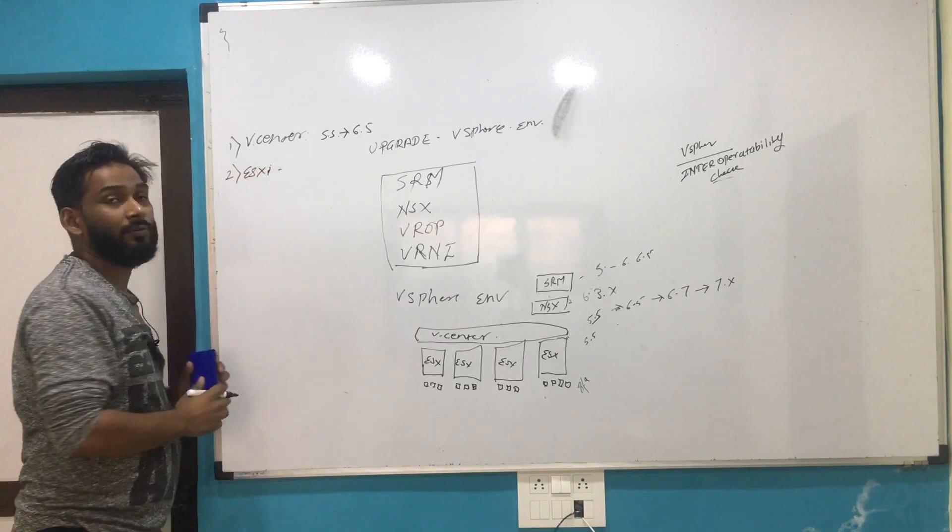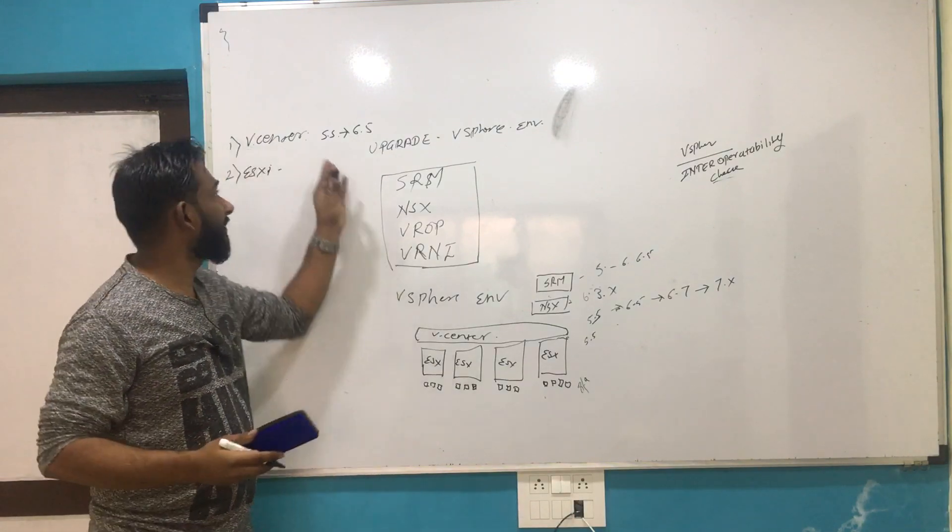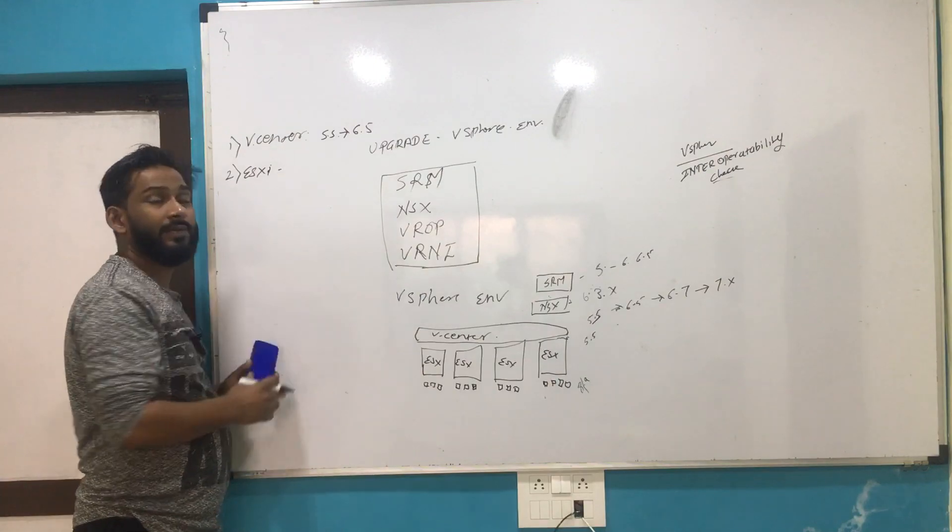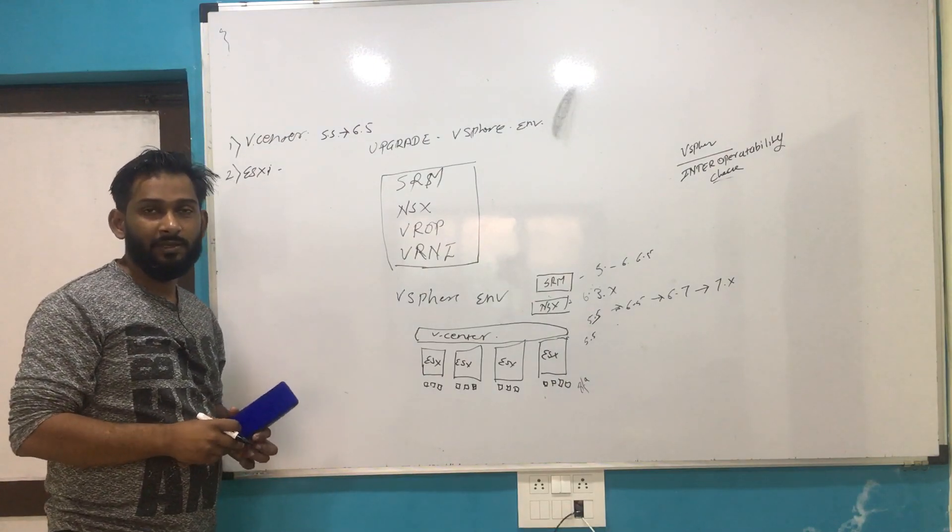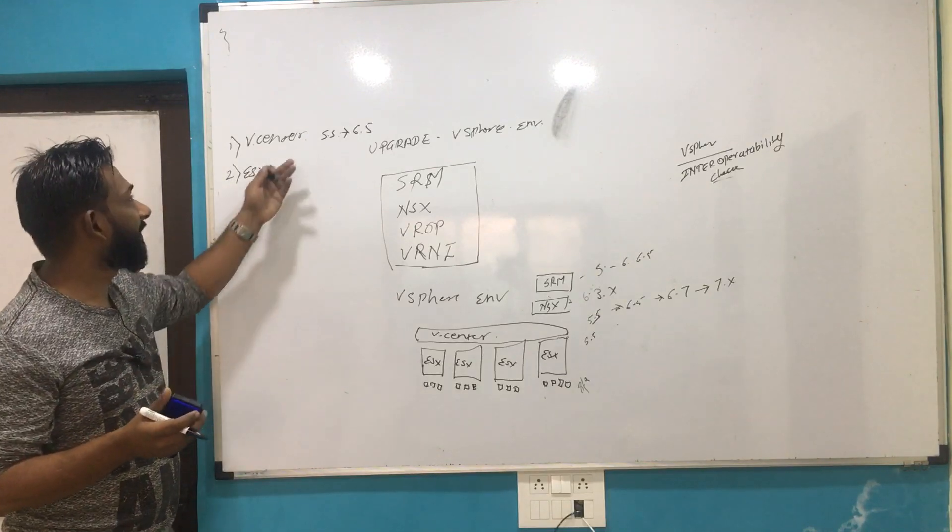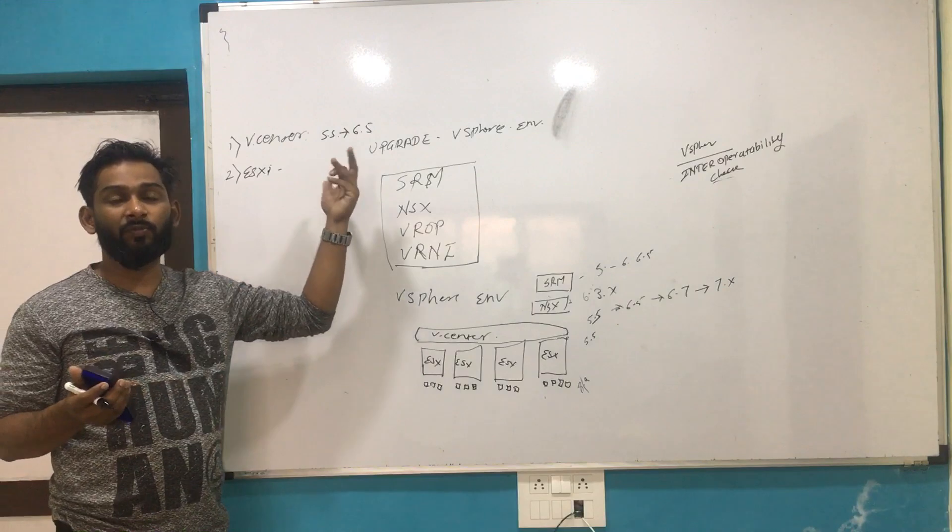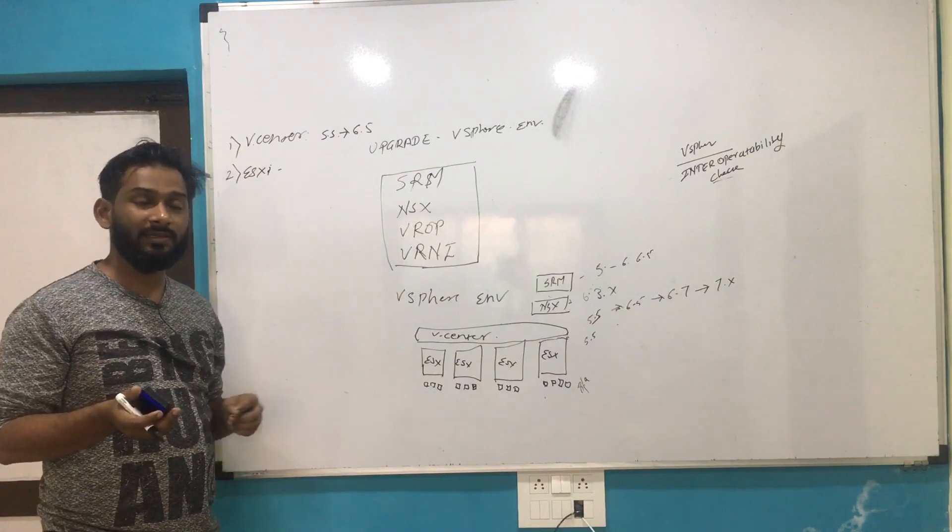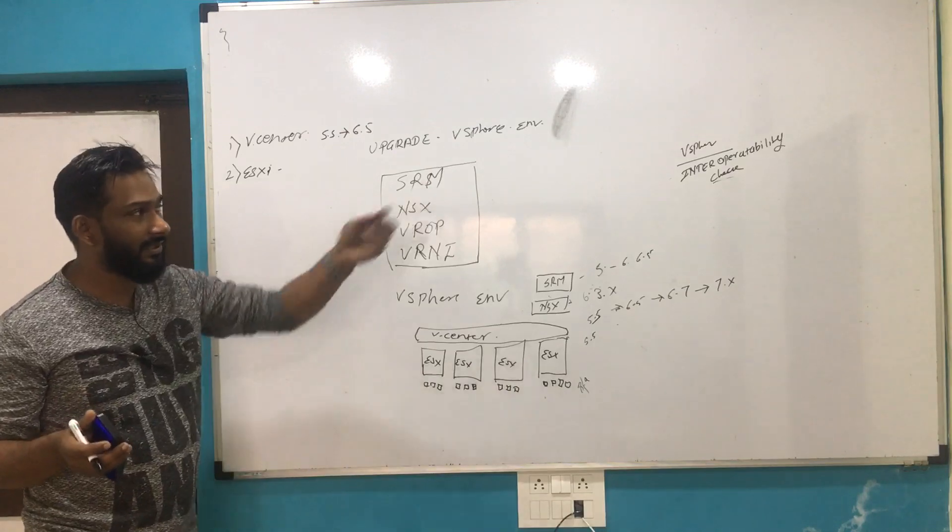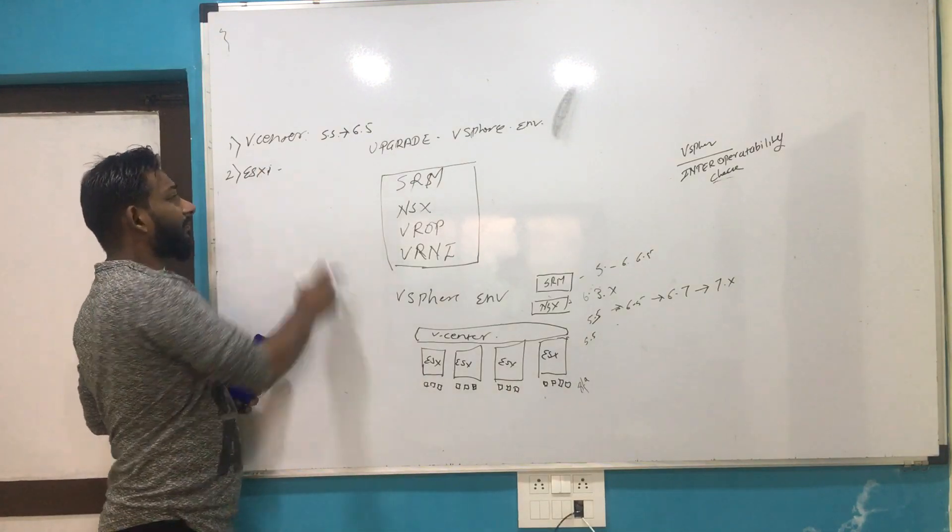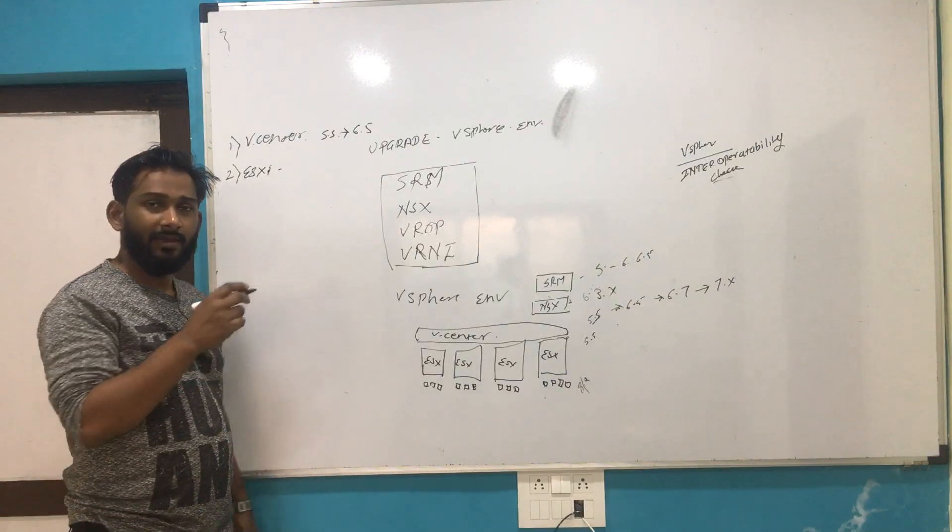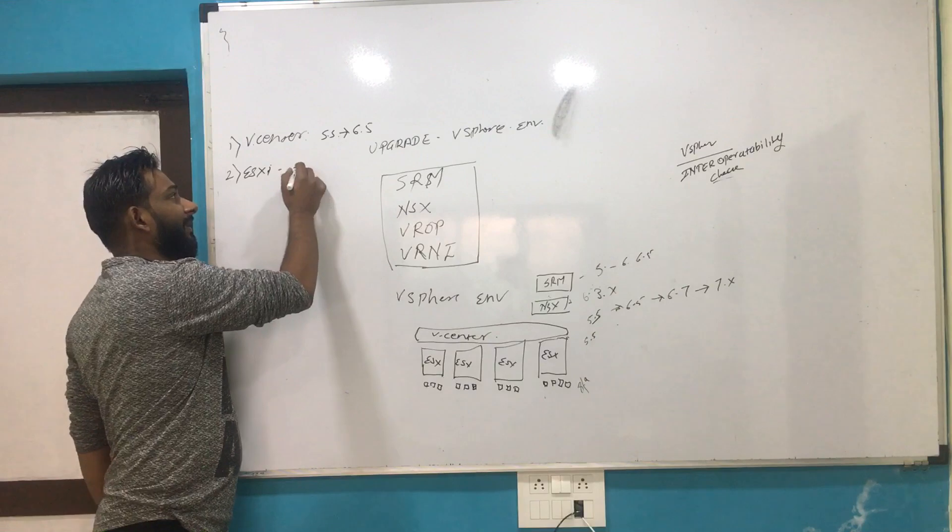ESXi has always backward compatibility mode. That means vCenter Server always supports the older version of ESXi hosts, a couple of versions behind. Even if you have vCenter Server on 6.5 and ESXi 5 or 5.5, that will still work. But sometimes you cannot have ESXi 4.0, so for that you check the interoperability matrix in detail.